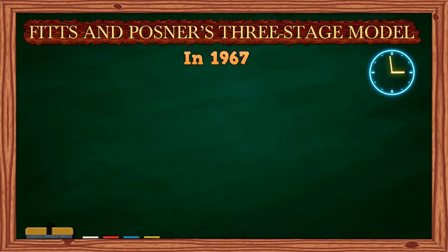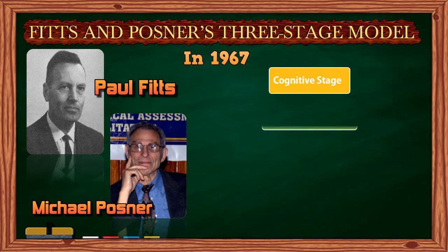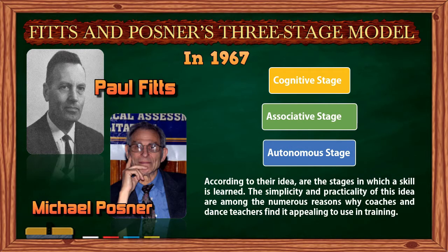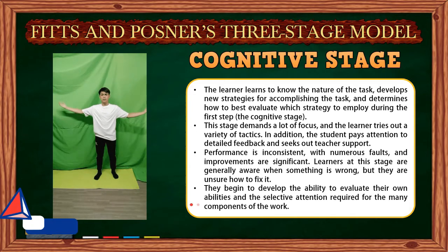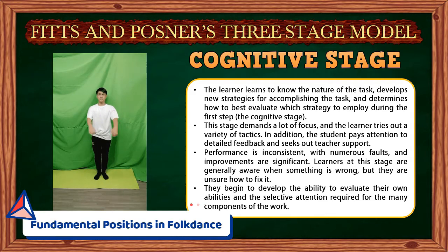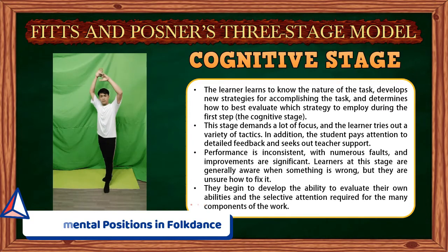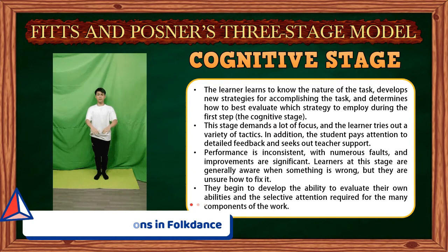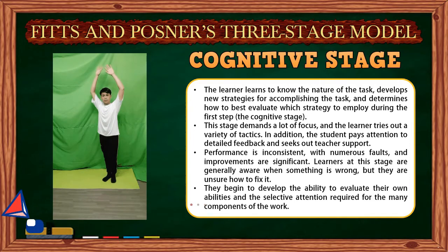Fitts and Posner's three-stage model. In 1967, psychologists Paul Fitts and Michael Posner established a model for learning stages still used today: the cognitive stage, the associative stage, and the autonomous stage — the stages in which a skill is learned. During the cognitive stage, the learner learns the nature of the task, develops new strategies, and determines the best approach. This stage demands a lot of focus, and the learner tries out a variety of tactics, paying attention to detailed feedback and seeking teacher support. Performance is inconsistent, with numerous faults, but improvements are significant. Learners are aware when something is wrong but unsure how to fix it, and they begin developing selective attention across components of the task.